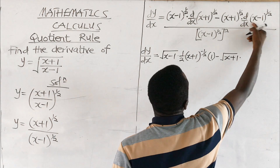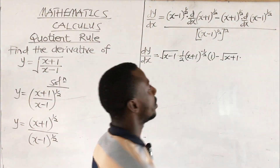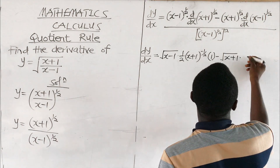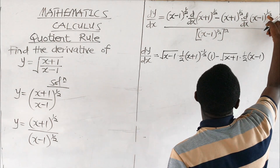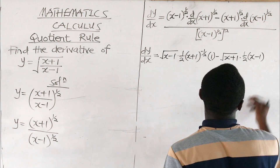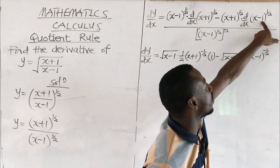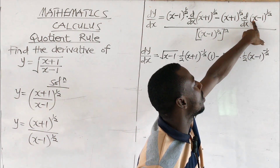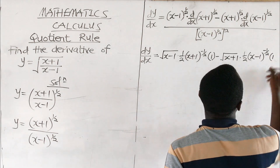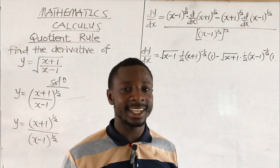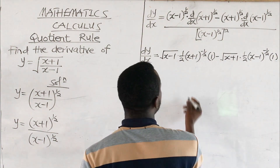Then we differentiate (x minus 1) to the power half using the same chain rule idea. The exponent multiplies the bracket: half times (x minus 1) to the power (half minus 1), giving negative half. Then we differentiate what's inside the bracket — differentiating x gives 1, differentiating the constant negative 1 gives 0, so we still have 1.